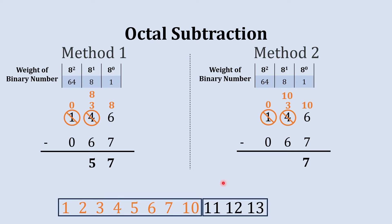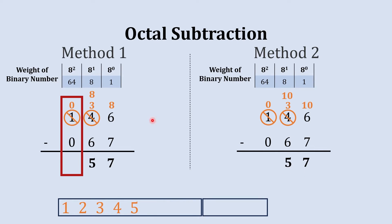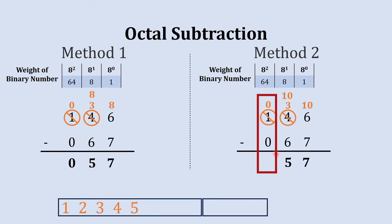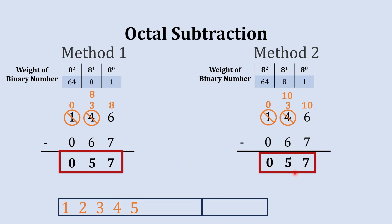We subtract 6 from 13 in octal and we get 5. So 5 is written in that column. For the final column, 0 minus 0 gives us 0 — the same way in both methods, 0 minus 0 gives 0. So the final result of this octal subtraction is 57.